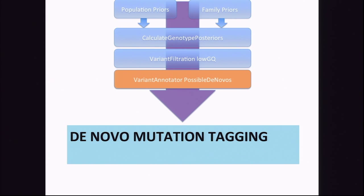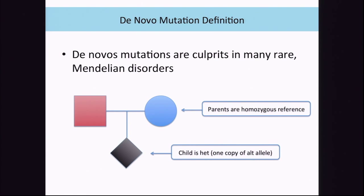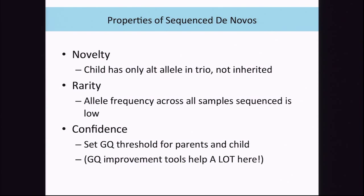Here's an example analysis using this high-quality posterior data: tagging possible de novo mutations in trios. De novo mutations are responsible for a wide variety of Mendelian disorders. They occur in scenarios where the parents are homozygous reference but the child is heterozygous—carrying one copy of an allele representing a spontaneous mutation. We need to ensure de novos in the child aren't inherited from the parents, that parents are both homozygous reference, and that the allele doesn't show up too many times across the cohort—since spontaneous mutations at the exact same location in multiple children is very implausible.